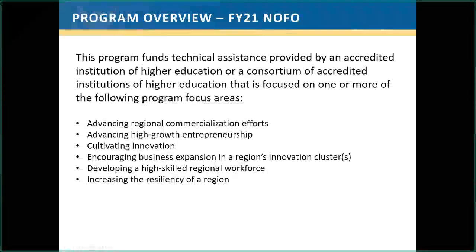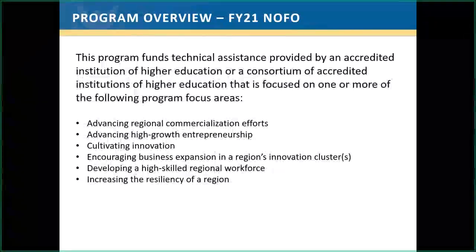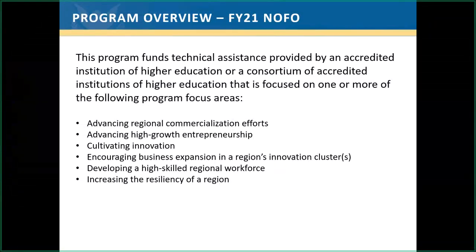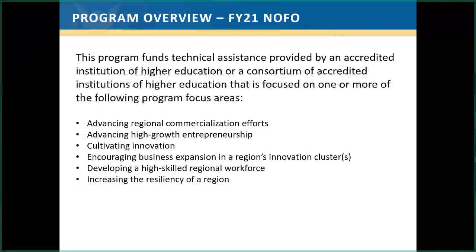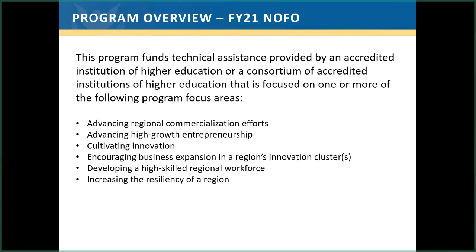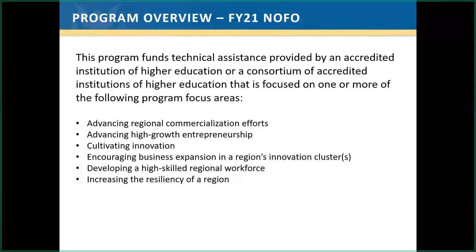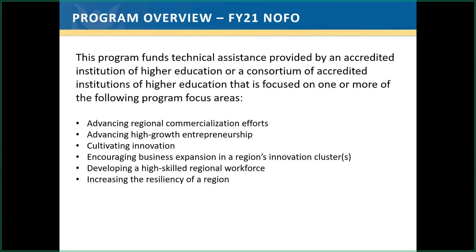The University Center program has six program focus areas, all described in detail in the NOFO. Many of these may be familiar if you are a current funded university center or have applied in the past. This year we've added a new focus area to reflect the emerging need for regions across the nation to increase their resiliency to both economic and natural disasters.